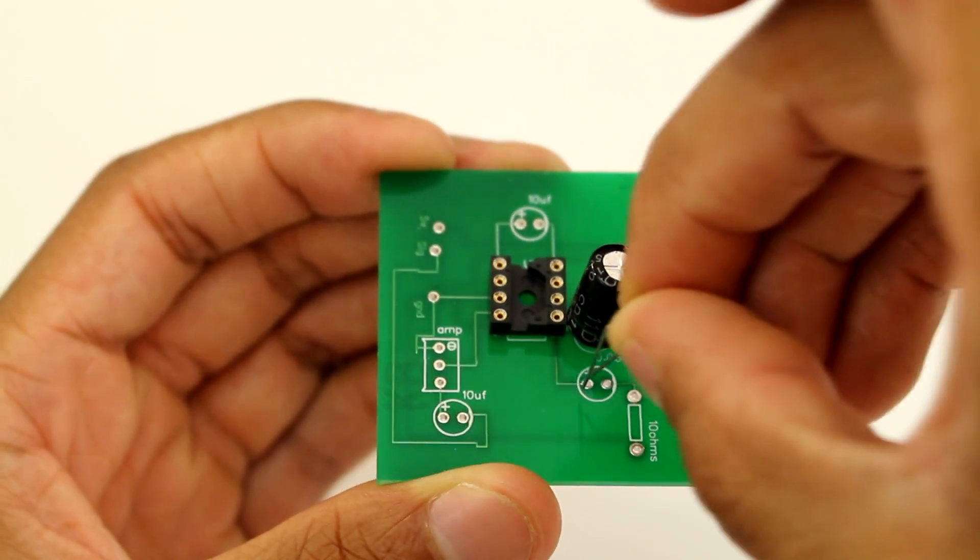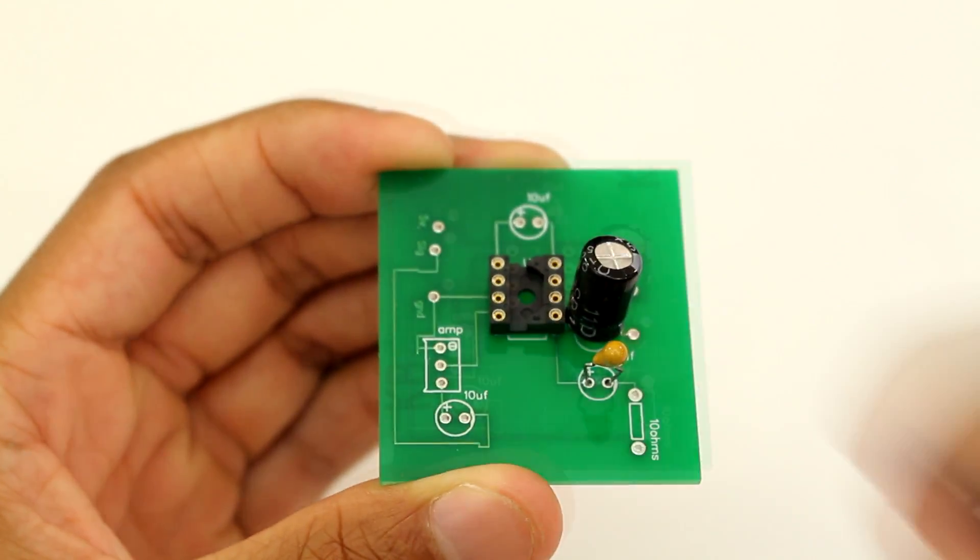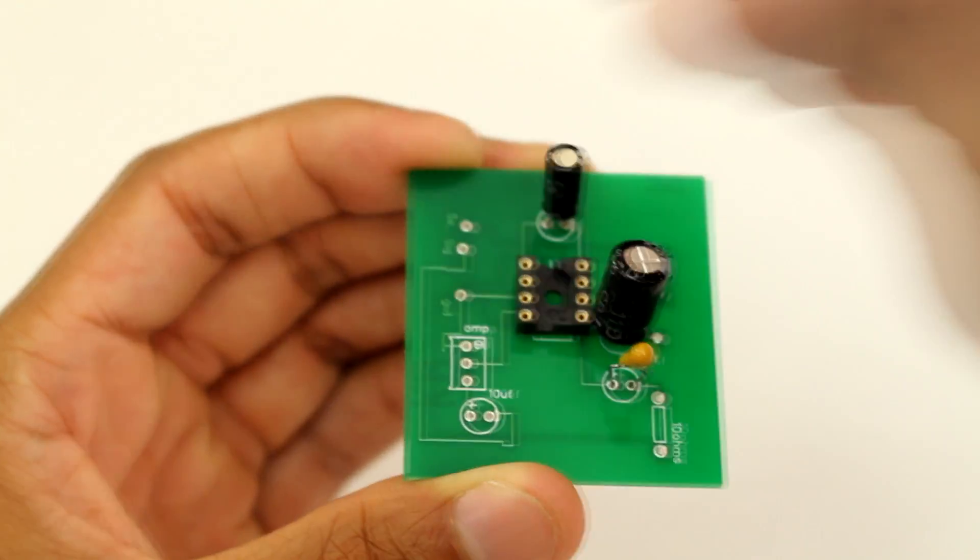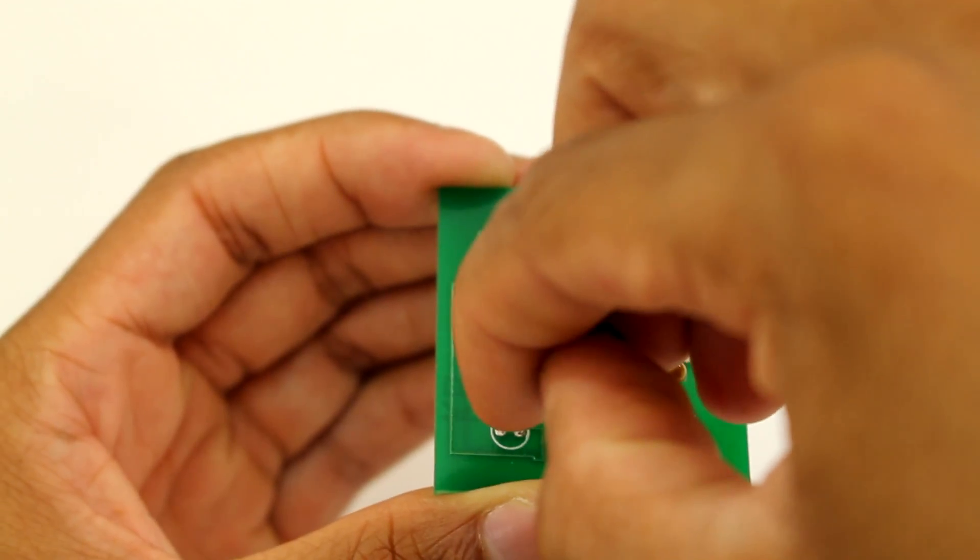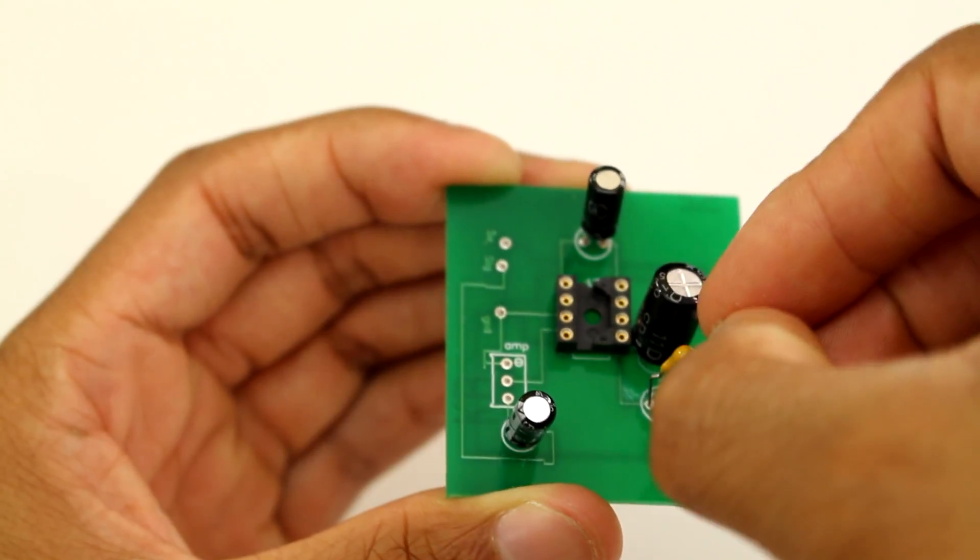Essentially what this circuit that we're designing is meant to do is it's going to amplify a signal coming out of your phone or computer or whatever it is, and then it's going to make that signal very loud and that's going to come out of the speakers.